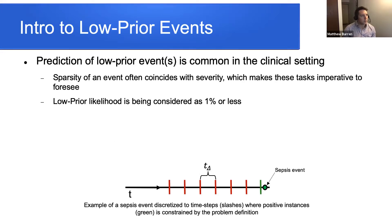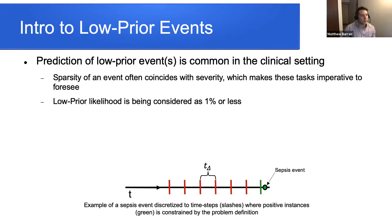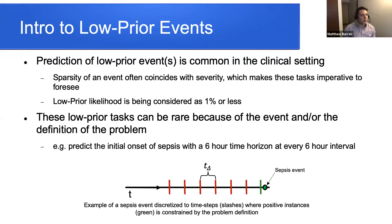Prediction of low prior events is common in the clinical setting. The sparsity of an event often coincides with its severity, making these tasks imperative. In this context, low prior likelihood refers to around 1% or less of positive classes relative to the negative. These tasks can be rare because the event itself is rare, or because of the problem definition — for example, initial onset of sepsis, which is defined at most once per sequence. Further, interval segmentation (e.g., every six hours vs. three hours) increases the number of negatives relative to that single event.